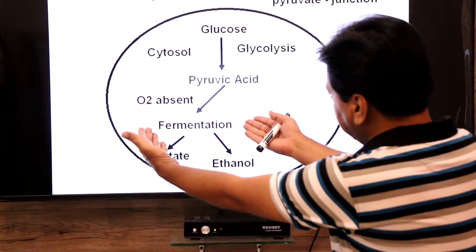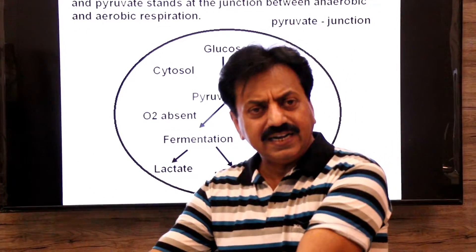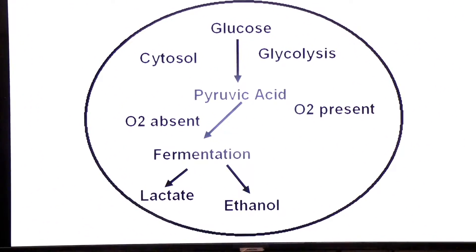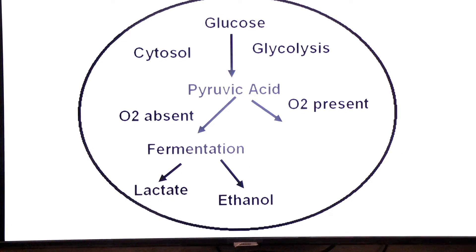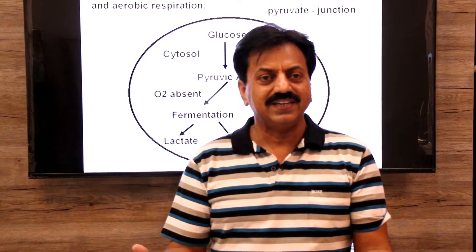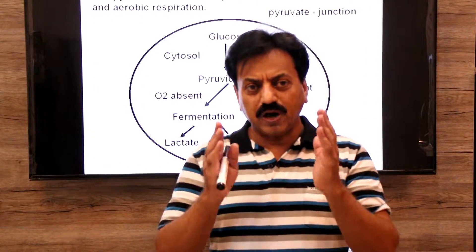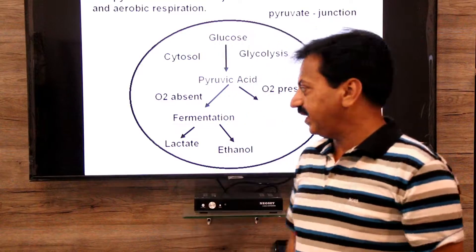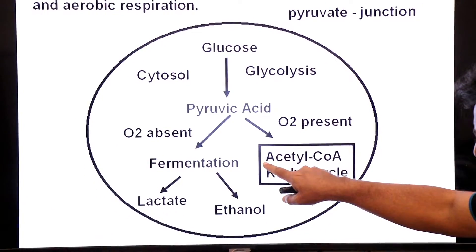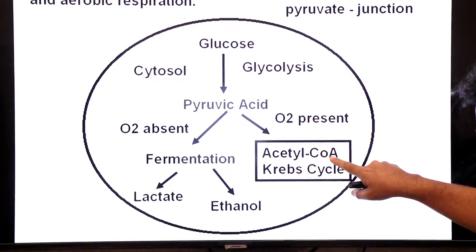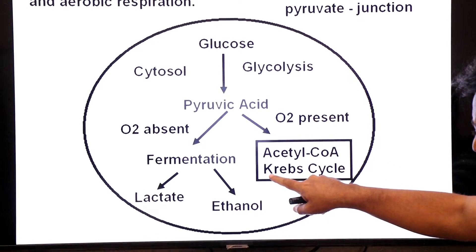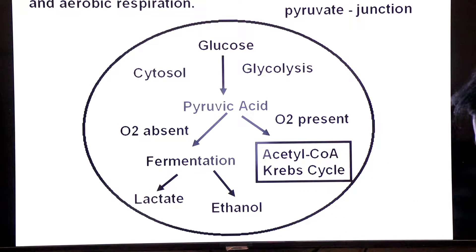That is why, when oxygen is not available, the pyruvate acid undergoes the additional process of fermentation. But when oxygen is present, pyruvate goes into the mitochondria, is converted into two-carbon acetyl coenzyme A, and moves into the Krebs cycle.